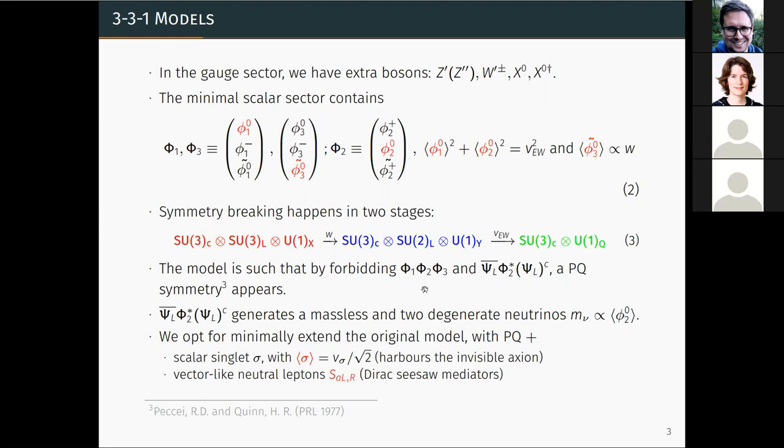When we write down the full Lagrangian, we notice that it displays almost an automatic Peccei-Quinn symmetry. And if you just forbid two operators, these two here, we have the symmetry appearing in our model. For the second operator, it's interesting to notice that it generates neutrino masses. However, one of the neutrinos is necessarily massless, and the other two degenerate and have masses proportional to the VEV of the second triplet, which is of order of the electroweak scale. So we don't have a suppression mechanism for neutrino masses here. So it gives us another motivation to implement the, to impose the PQ symmetry, so that we can generate neutrino masses properly with a suppression mechanism. And at the same time, with this PQ symmetry, you can implement the PQ mechanism to solve the strong CP problem and also have a dark matter candidate as the axion.